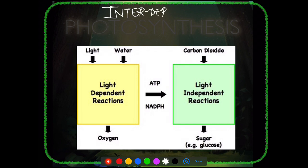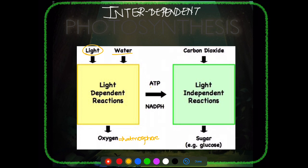Why are they called interdependent? During the light-dependent reaction, pigments trap light energy. Water is also required, and it undergoes a process called photolysis, releasing oxygen to the atmosphere. This produces two very important high-energy intermediates: ATP and NADPH. These are the products of the light reaction and can only be formed when you have light, water, and pigments.